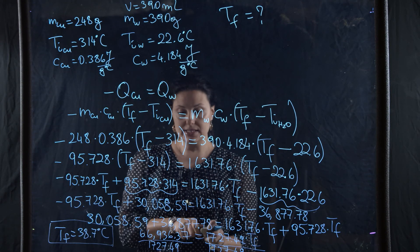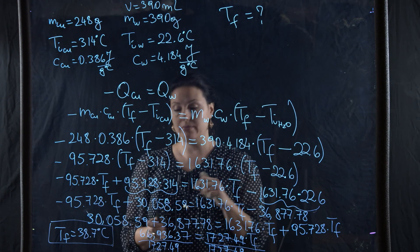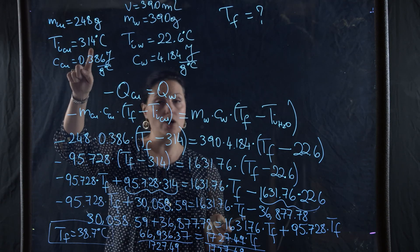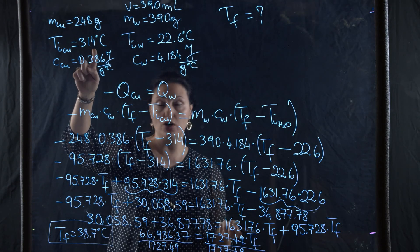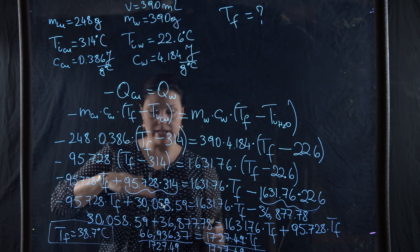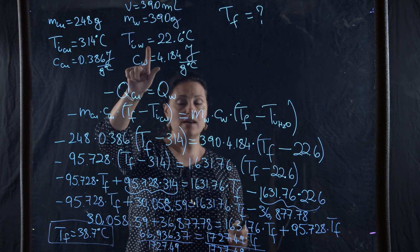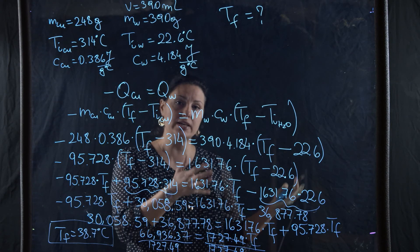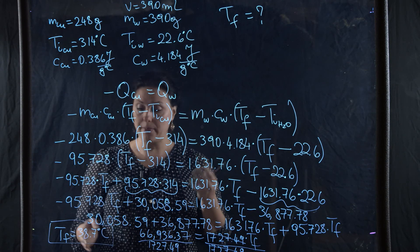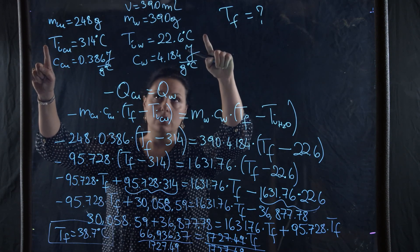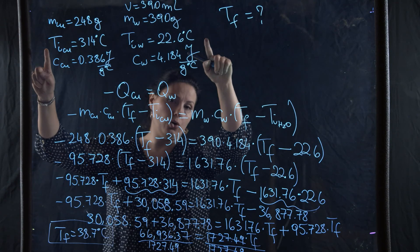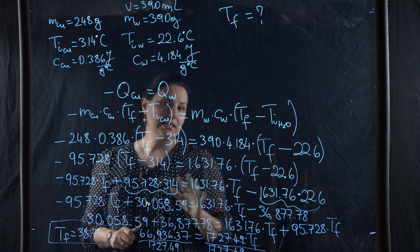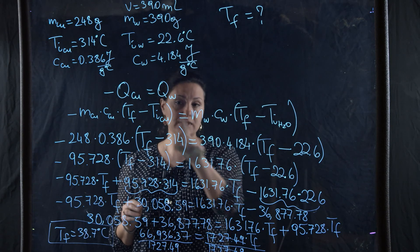Let's check: the final temperature is less than the initial temperature of the copper (314°C), which makes sense because copper was the hot object and loses heat. It is also greater than the initial temperature of the water (22.6°C), which makes sense because water gains heat. The final temperature is between the two initial temperatures — that's exactly what we need.